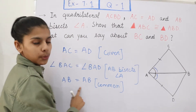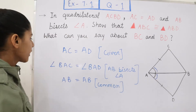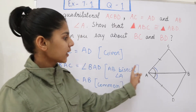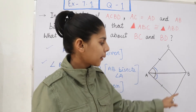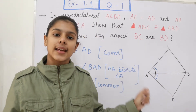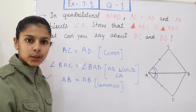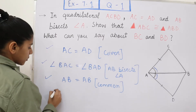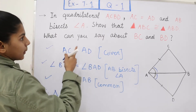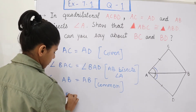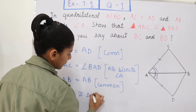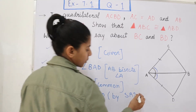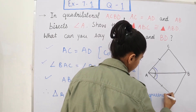So here we have got three conditions: two sides and one included angle equal. Therefore we can write that triangle ABC is congruent to triangle ABD. By which congruence rule? It will be by SAS — Side Angle Side — because we have two sides and one included angle equal. So both triangles are congruent by SAS congruence rule.